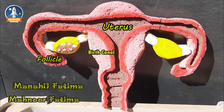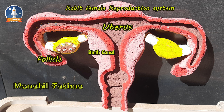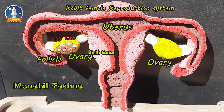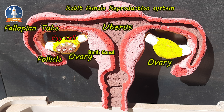The male rabbit deposits its sperm in the vagina of the female. Sperm swim through the cervix and uterus to the fallopian tubes, where they fertilize the egg cell released from the ovary. After fertilization, the zygote is carried to the uterus. The zygote starts dividing and is now called an embryo. The connection is now called placenta.